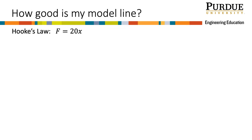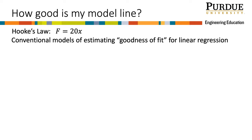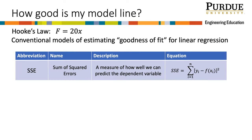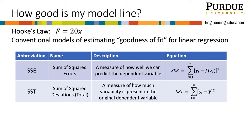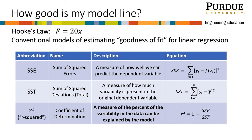Let's assume we have determined the slope of our modeled line for the spring and have an equation with a numerical value for k. A good model will increase our confidence that the value for k is valid for our data. In this course, we will use the following conventional goodness-of-fit models: the sum of squares due to errors, which measures how well the model predicts the dependent variable; the sum of squares of the deviations or total sum of squares, which measures how much variability is present in the original dependent variable; and the coefficient of determination, which is a ratio or percent measure of how much variability in the data can be explained by the model.